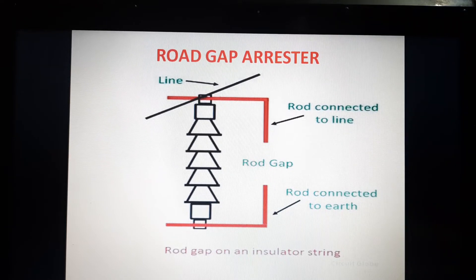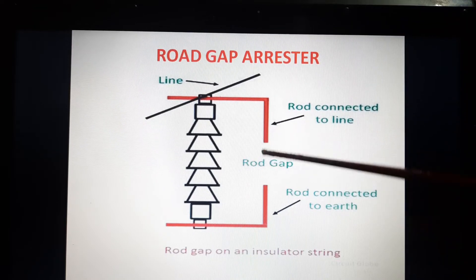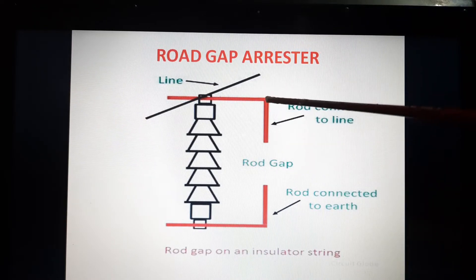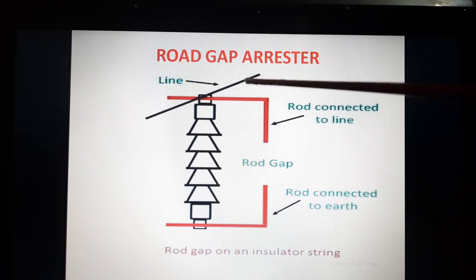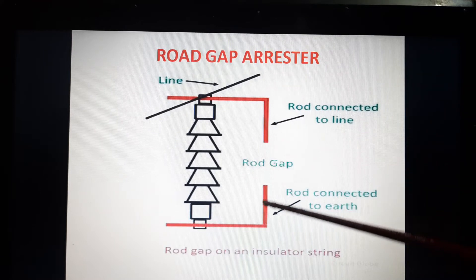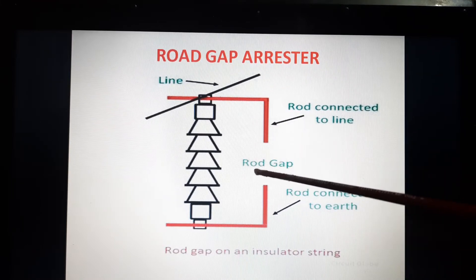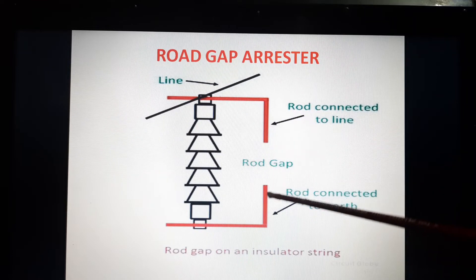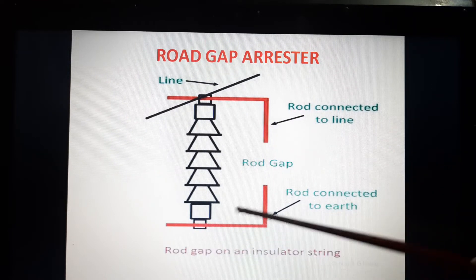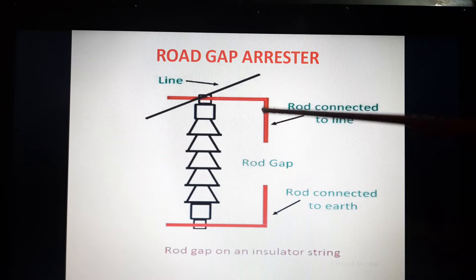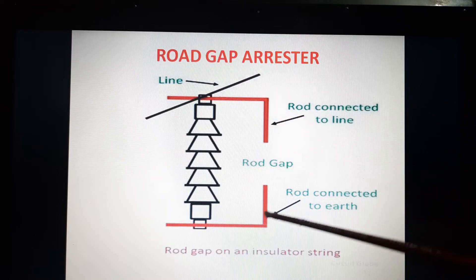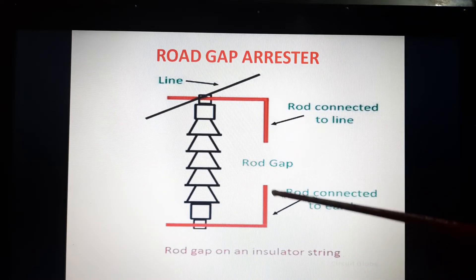During normal voltage, the gap is non-conducting, so the line voltage goes into the equipment. But when a high voltage surge occurs on the line, the gap sparks and becomes conducting. The surge current is then conducted to the earth via the rod, and the excess charge on the line due to the surge is conducted to earth, protecting the equipment.